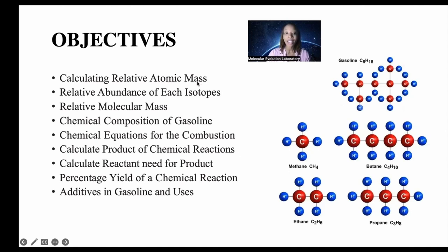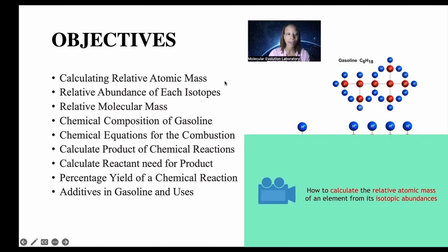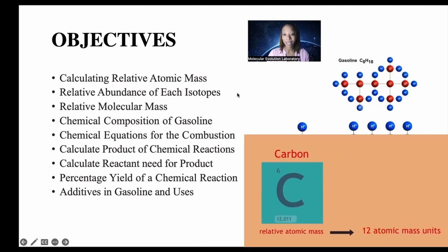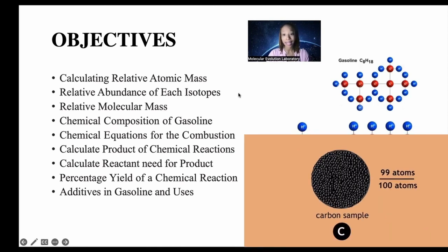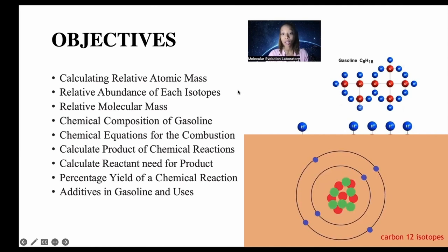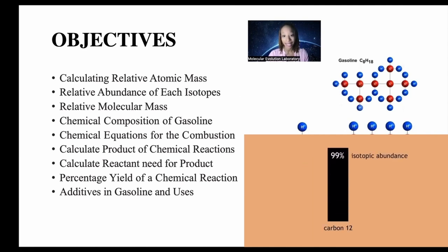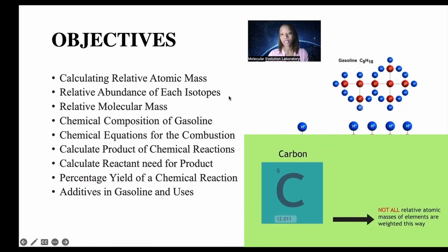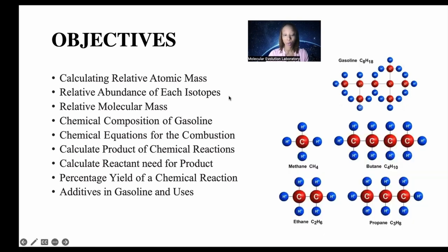The relative atomic mass is the average mass of one atom. The relative abundance of an isotope is basically an average of the total number of isotopes that exist — for example, carbon has three isotopes. The relative molecular mass of a molecule is the average mass of one molecule of a substance when compared to 1/12 of the mass of carbon. The chemical composition of gasoline is very simple — they're mostly hydrocarbons.